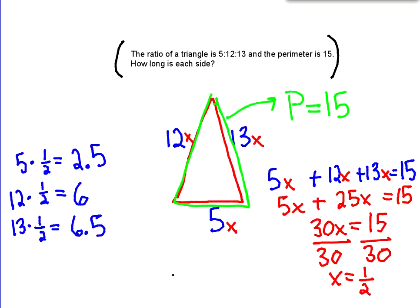So the side lengths are going to be, the first side length down here is going to be 2.5, the second one is going to be 6, and the last one is going to be 6.5. And that is how, if you know the ratio, you just put x's in front of them, so 5x plus 12x plus 13x, and you make it equal to the perimeter, equals 15.